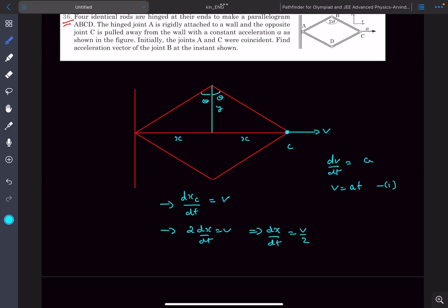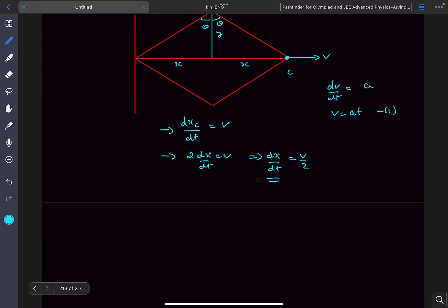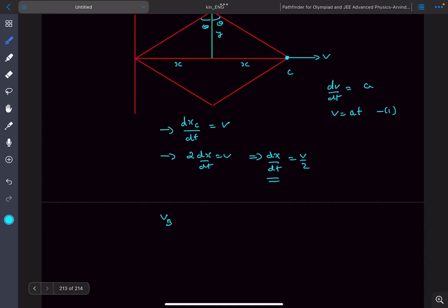Now if you observe the x coordinate of point B is basically x i cap, and as we have dx by dt, we can say the velocity of B in the x direction is V by 2.